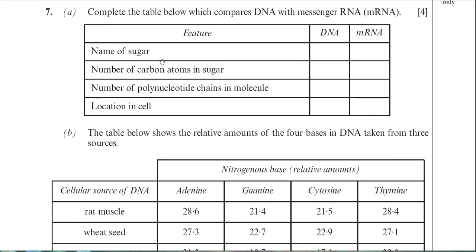The first question is all to do with DNA and messenger RNA. You have several features and you have to state in the boxes the name of the sugar found in DNA and in messenger RNA, the number of carbon atoms in the sugar, the number of polynucleotide chains in the molecule, and lastly the actual location of the molecule within the cell. The name of the sugar in DNA is deoxyribose.